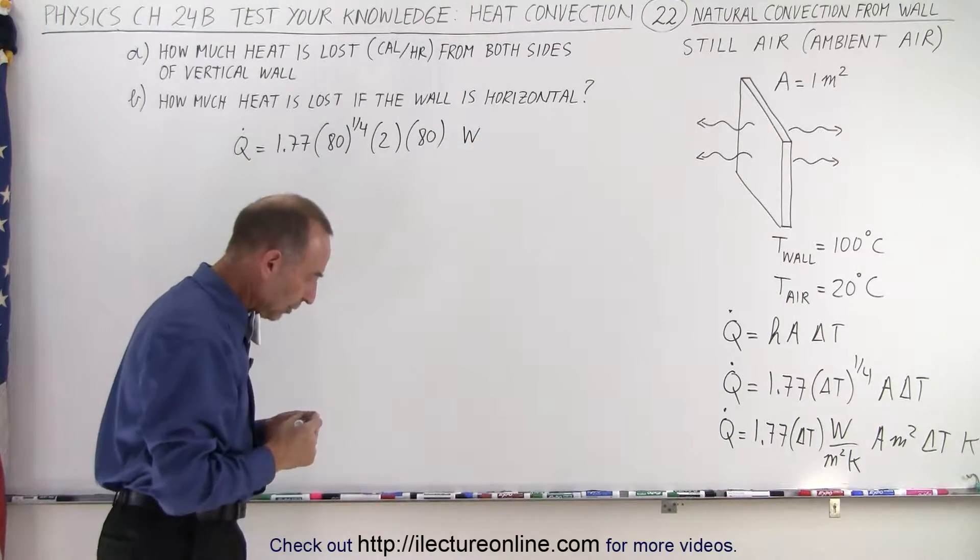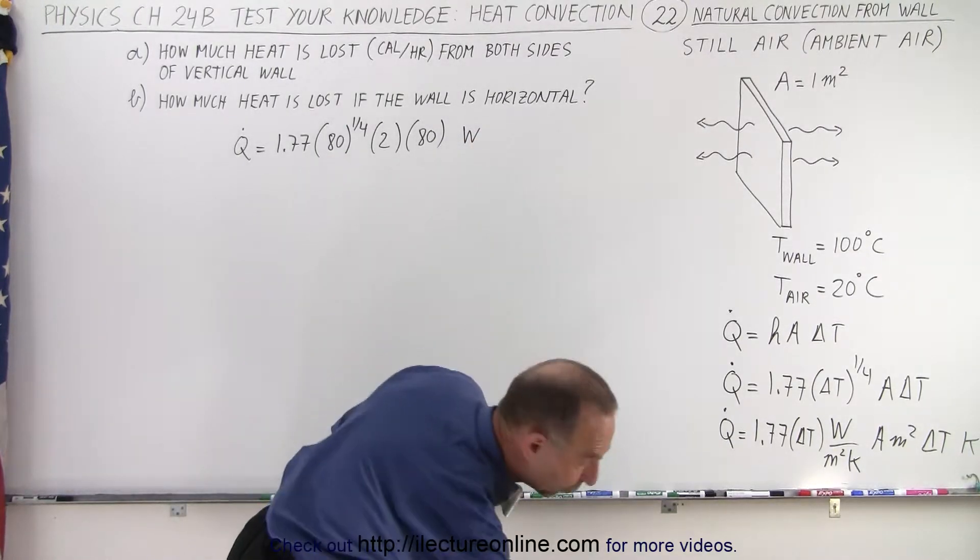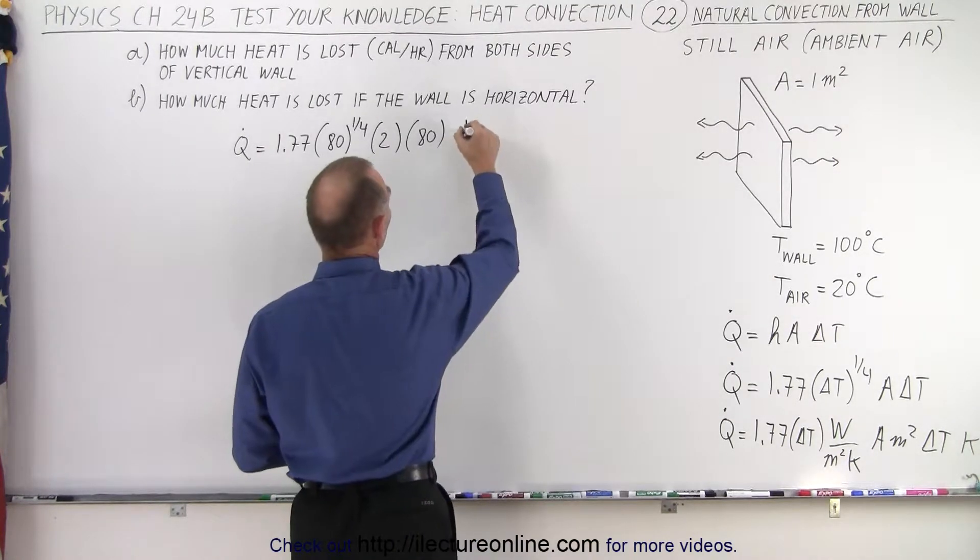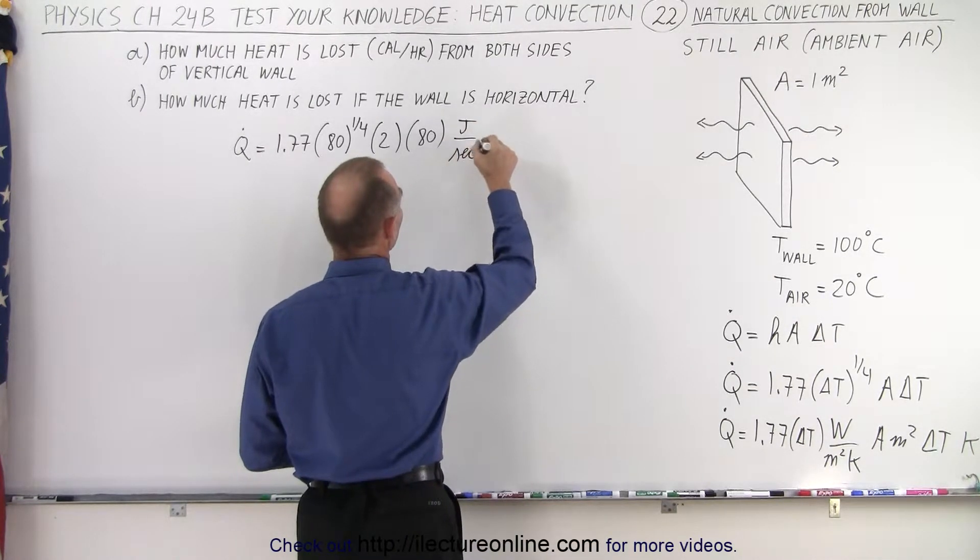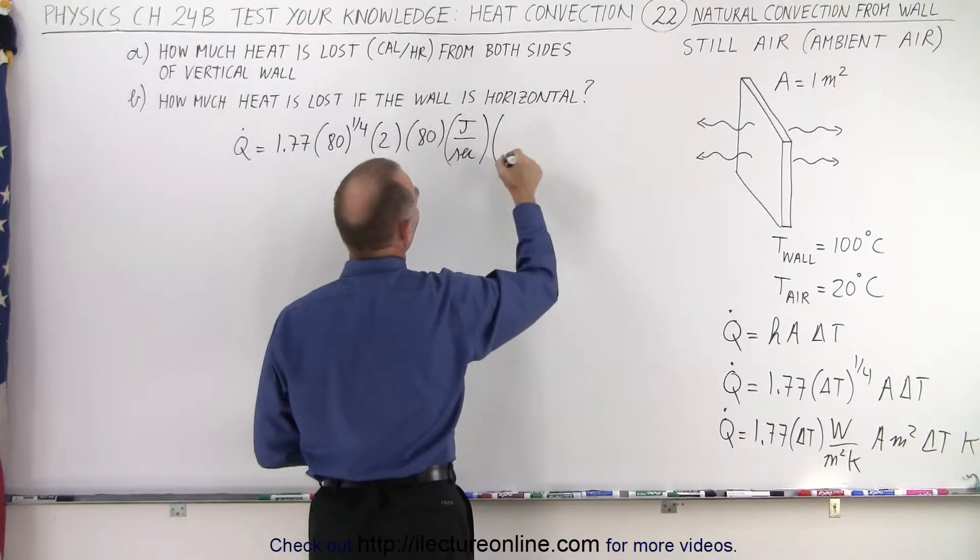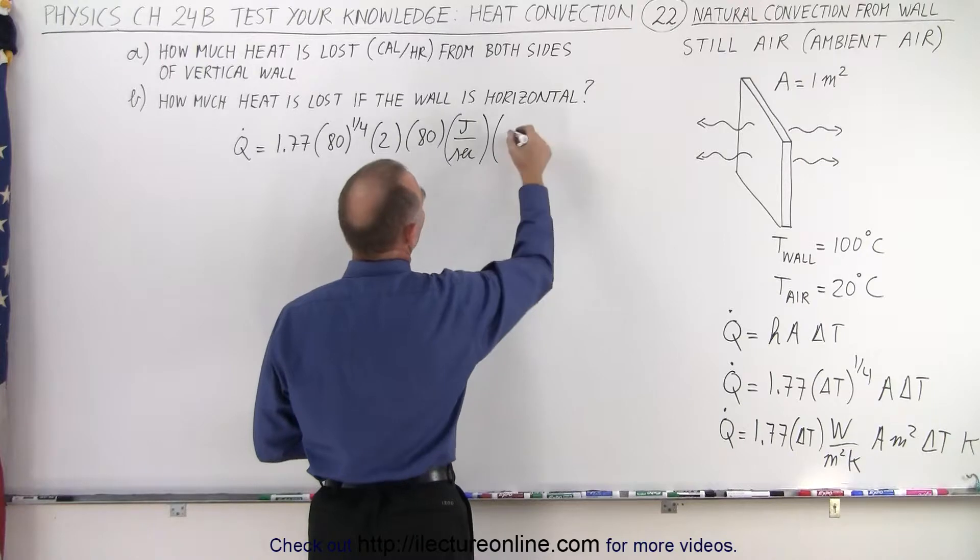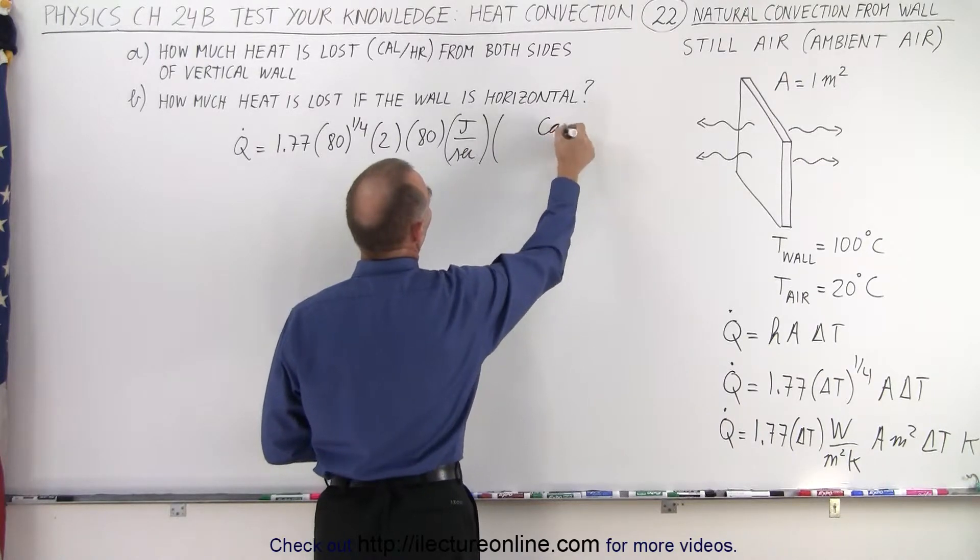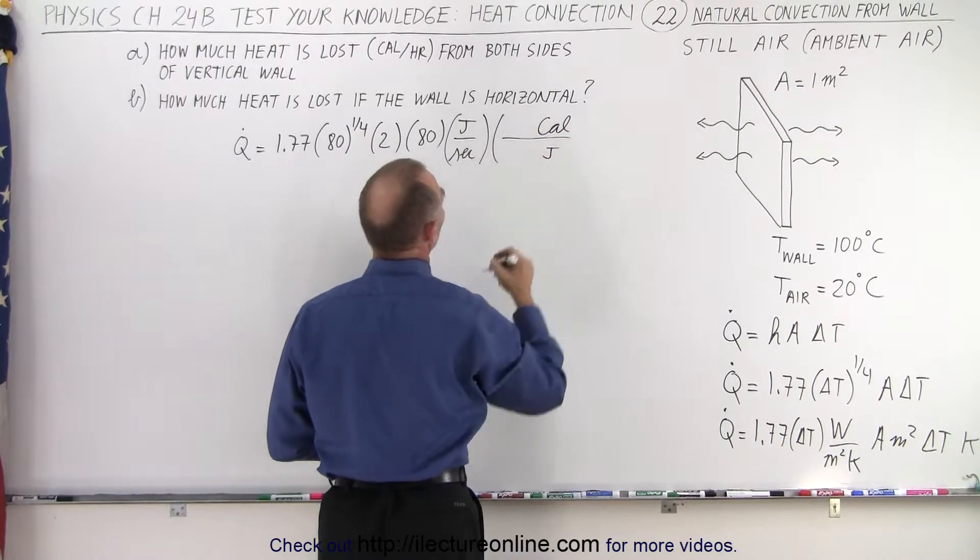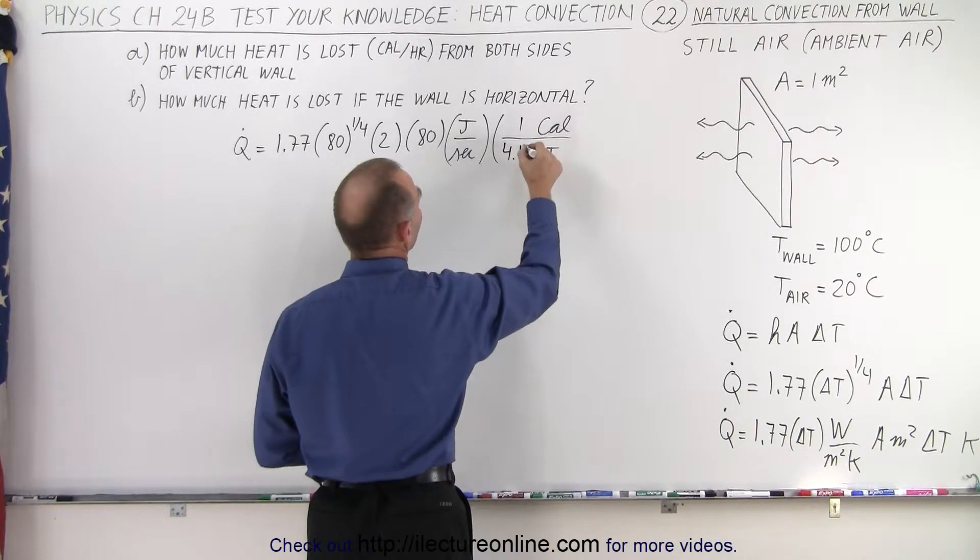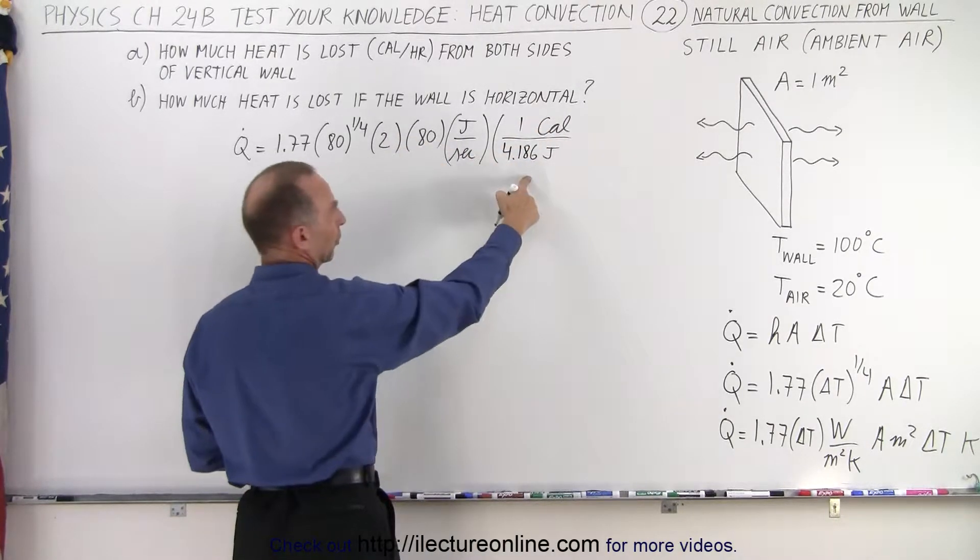And then if we want to convert that, or let me write it in terms of joules per second. So that will be in terms of joules per second. If we want to convert that to calories, then we have calories versus joules, and one calorie is 4.186 joules. So we have to divide everything by 4.186.